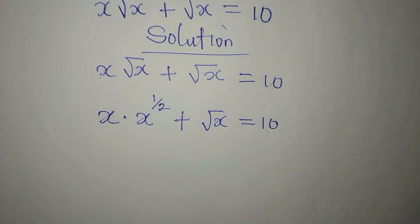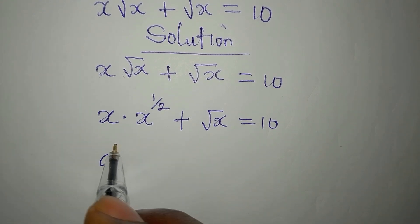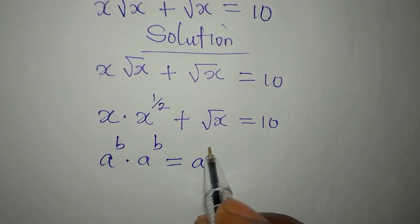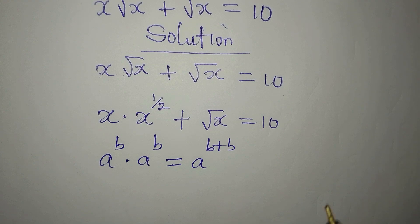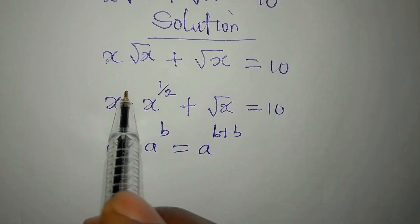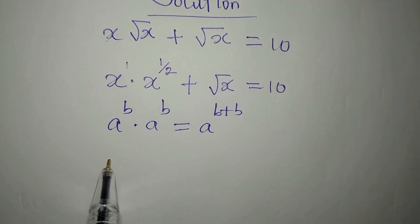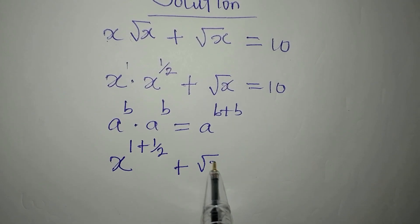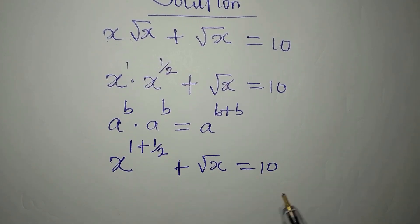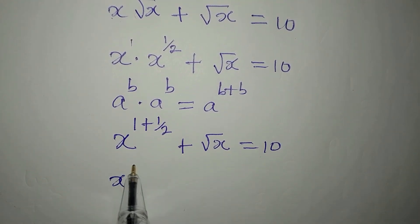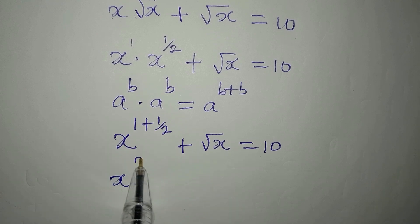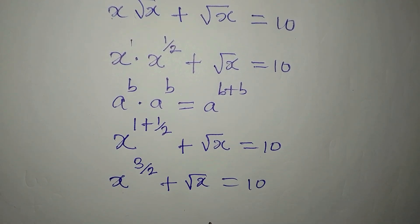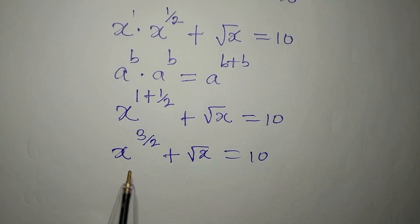Now we will apply one of the rules of indices: if you have a to the power of B times a to the power of B, this will be the same as a to the power of B plus B — pick one of the bases and add the powers. There is an invisible power of 1 there, so when we pick x we add the powers: 1 plus 1 over 2, giving x to the power of 3 over 2, then plus square root of x equals 10.